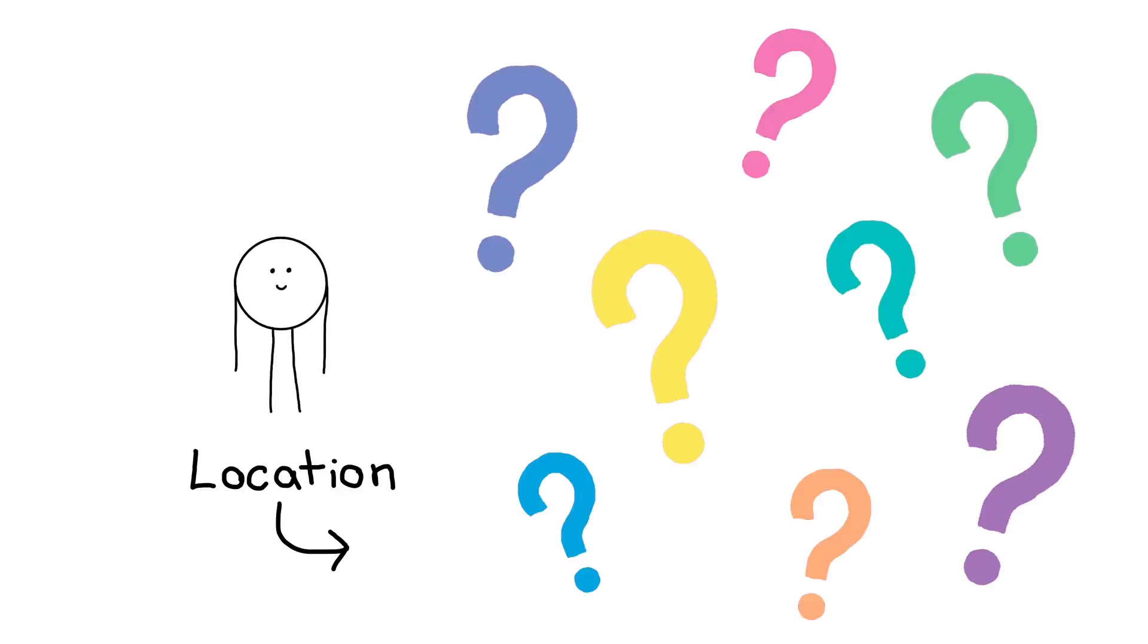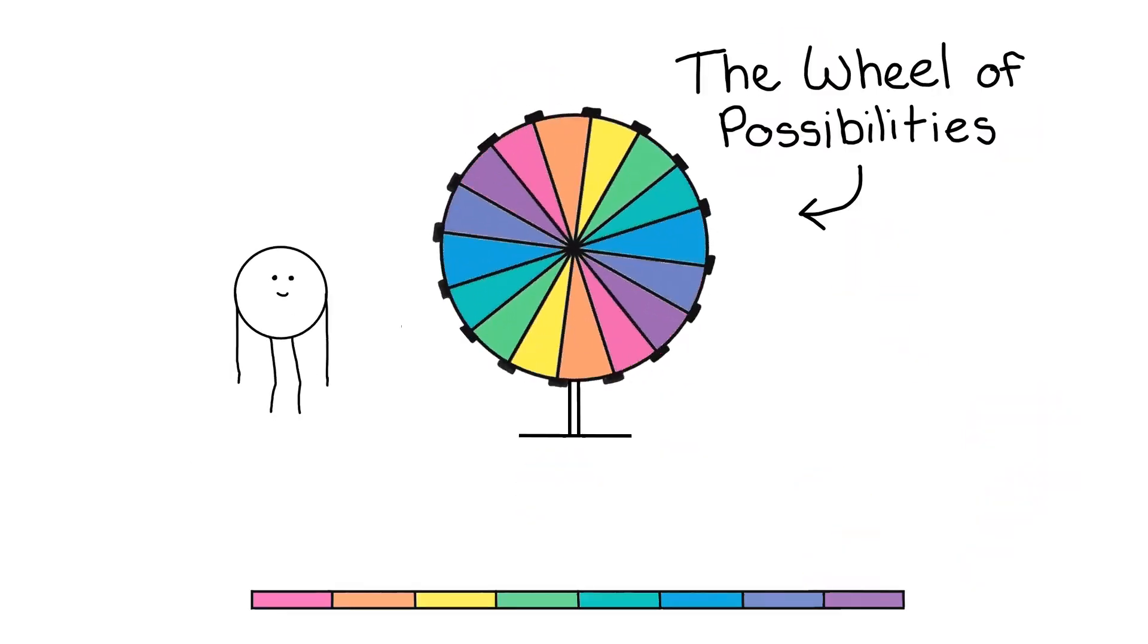Quantum mechanics studies subatomic particles, which have some wacky habits, like this electron. It behaves like a wave and a particle. This means we can't know the exact location of the electron, so this wheel represents the places it can be.